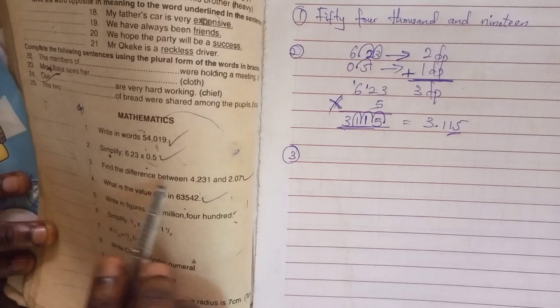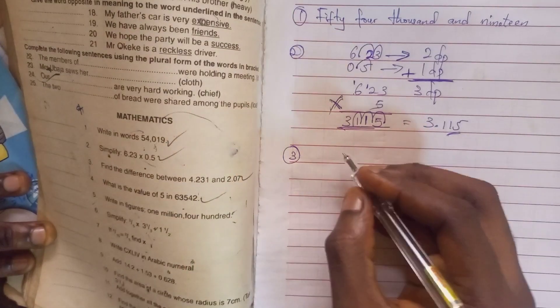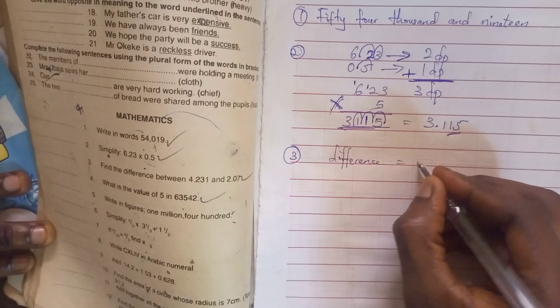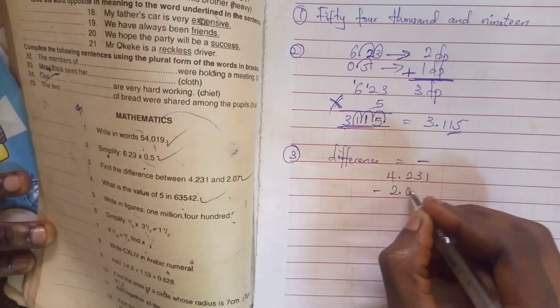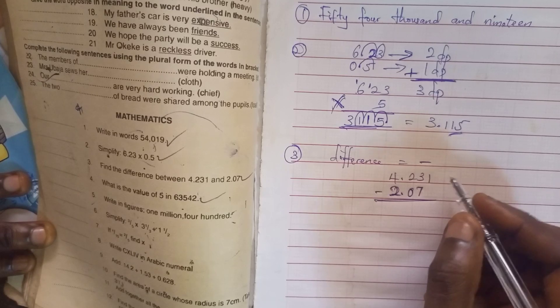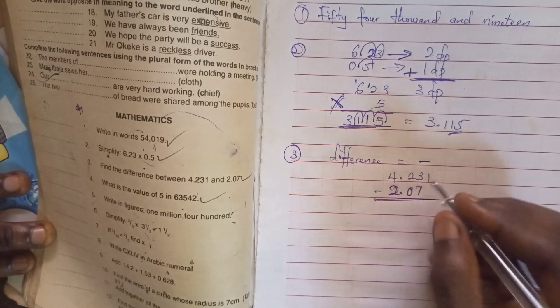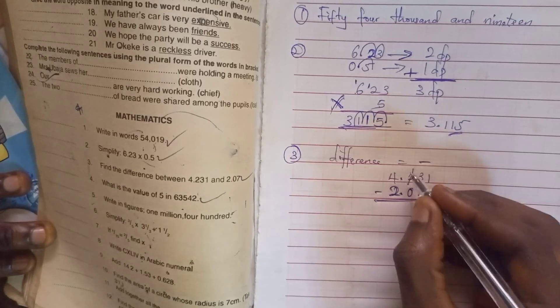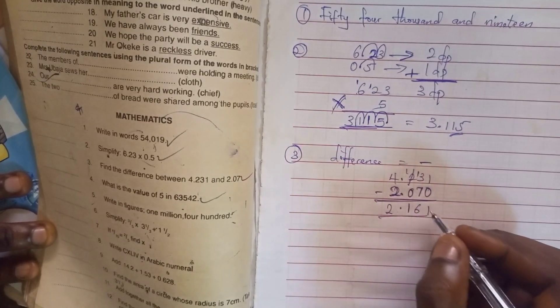Now the third one is find the difference between 4.231 and 2.07. So we find the difference. Finding difference simply means we subtract, that is minus. Write 4.231 minus 2.07. While writing this, make sure that the points are in a single line, in a vertical line. Write your 0 here. Bring down your 1. 3 minus 7 cannot go, so you borrow 1 from this. 13 minus 7 will give us 6. Bring down your 1 here point. So our answer is 2.161. That's the difference.